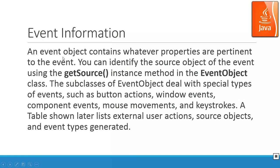An event object contains whatever properties are pertinent to the event. You can identify the source object of the event using the getSource instance method. getSource will show you which object or which component got clicked or got moved. The subclasses of event objects deal with special types of events such as button action, window events, component events, mouse events, and keystrokes.